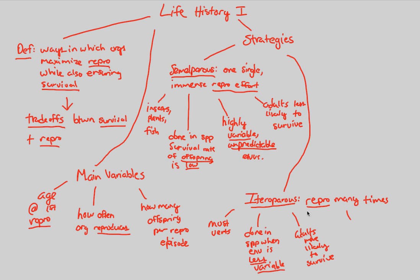One major negative of the iteroparous strategy — a big thing that ecologists really like to study — is the intense amount of competition for resources among organisms that exhibit this strategy. Because reproduction happens many times and most adults survive, you're going to need many resources, leading to a lot of competition. That's basic supply and demand in the iteroparous strategy, whereas the semelparous strategy focuses on a different environmental resistance pattern.